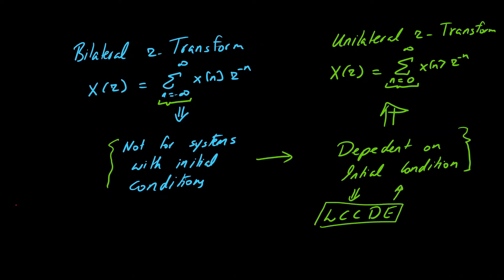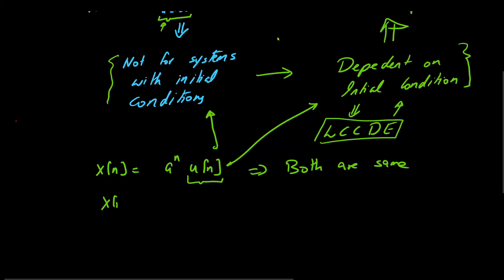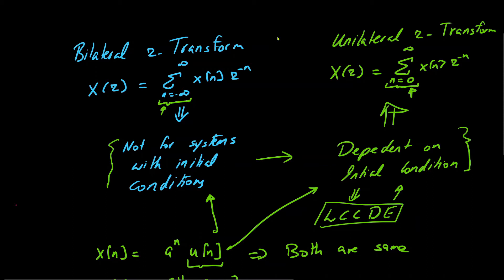These systems can be linear constant coefficient difference equations that have some initial conditions. Note that if we have a signal x[n] = a^n u[n], because of this unit step function, if you take the bilateral z-transform or the unilateral z-transform, both would be the same, because the summation is already starting at zero in both cases. But in case we have x[n] = a^(n+1) u[n+1], the summation would start from minus one.